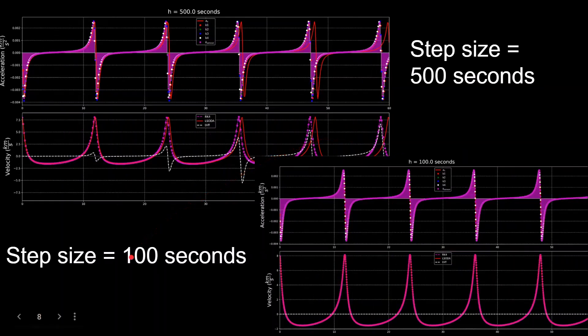Same thing here, looking at the x acceleration and velocity of the highly eccentric Molniya orbit for step size of 500 seconds. Again, the error and velocity becomes over the magnitude of the velocity itself. But at 100 seconds, it stays very small.